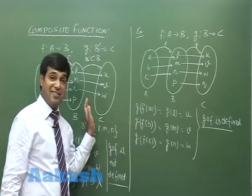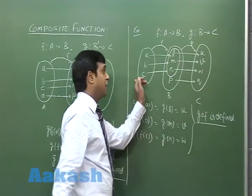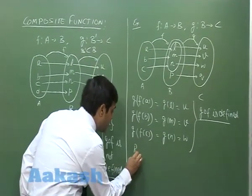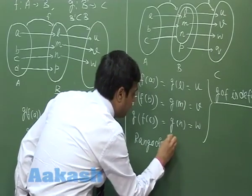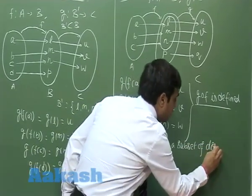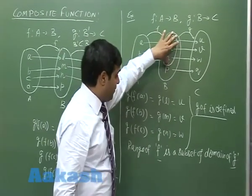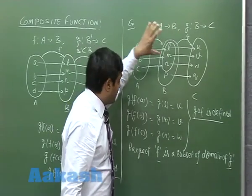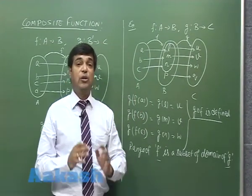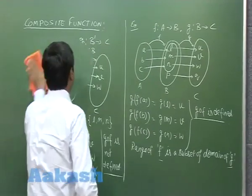We observe the difference between these two cases. In the second case we find that the range of function f is a subset of the domain of g. So the key condition is: range of function f must be a subset of the domain of function g. When this condition holds, the composite function g(f) is defined. So now we are in a position to give a proper definition to the term composite function and move on to some examples.